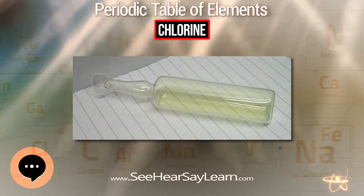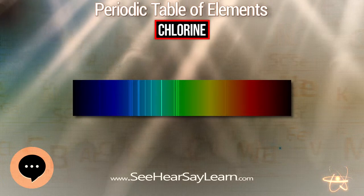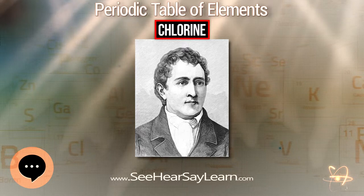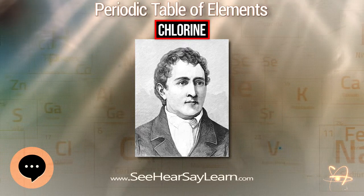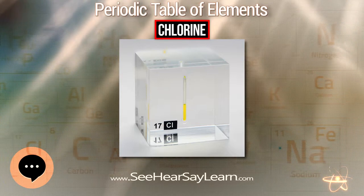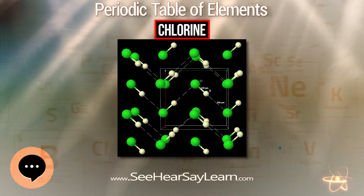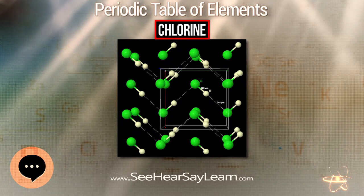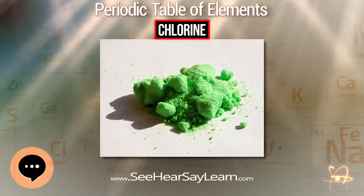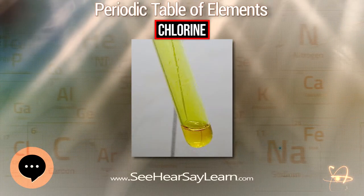Scheele called it 'dephlogisticated muriatic acid air' since it is a gas that came from hydrochloric acid. He failed to establish chlorine as an element because common chemical theory at the time held that an acid must contain oxygen. A number of chemists, including Claude Berthollet, suggested that Scheele's dephlogisticated muriatic acid air must be a combination of oxygen and the yet-undiscovered element muriaticum. In 1809, Joseph Louis Gay-Lussac and Louis Jacques Thénard tried to decompose it by reacting it with charcoal to release the free element muriaticum.